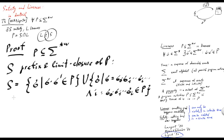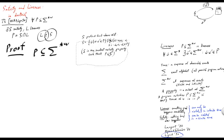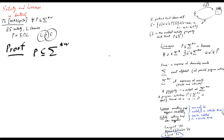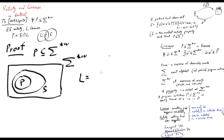One way to interpret this formula is to say that S is the smallest safety property that contains P. So what about the matching liveness property? Here we proceed in an obvious way. We consider the set of all possible traces, then we consider set P in it, then we consider the possibly larger set S, and then we define L as the complement of S minus P.